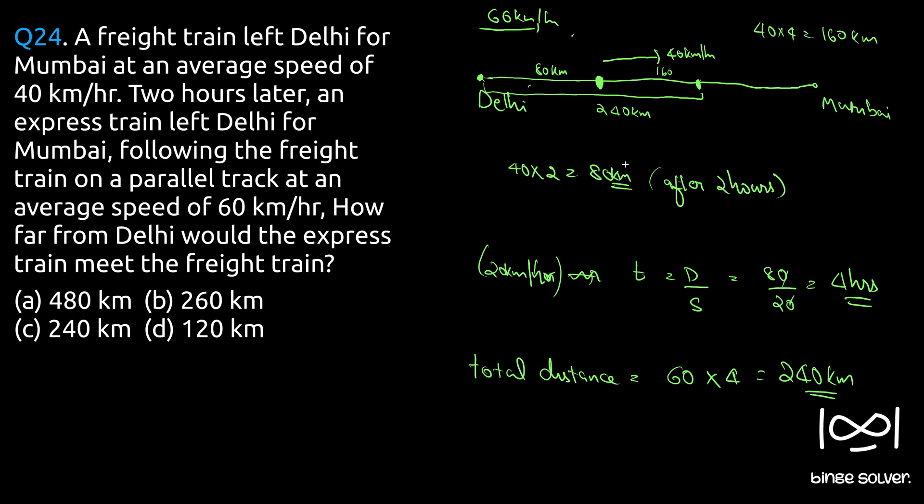Do check out if you have any confusion. If you further have any confusion, comment under this video and I will try to address it. The solution to question 24 is C, 240 kilometers. That is, by the time the express train catches up with the freight train, it must have traveled 240 kilometers from Delhi.